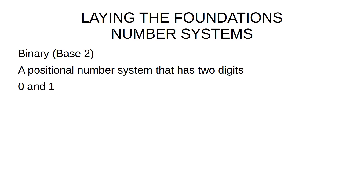Those little tiny electronic switches only have two states — they can either be on or they can be off. So because there are only two states, we can only use two digits. We as humans have ten digits — eight fingers, two thumbs — so we can have ten digits in our number system. A computer can only have two states: zero and one, on and off. Hence, we have zero and one as the only digits in the binary number system. This is extremely computer-friendly, because computers are full of these little tiny transistors.